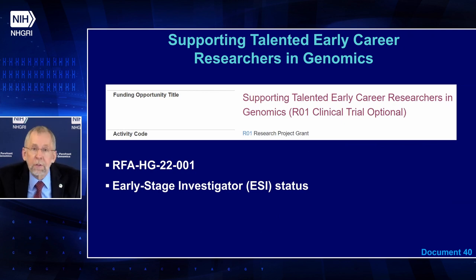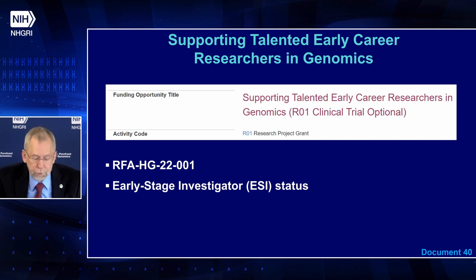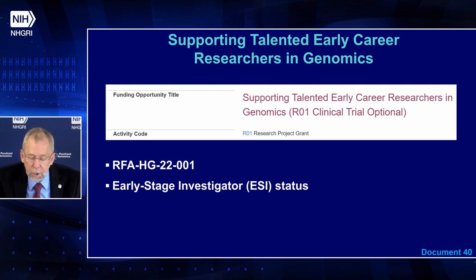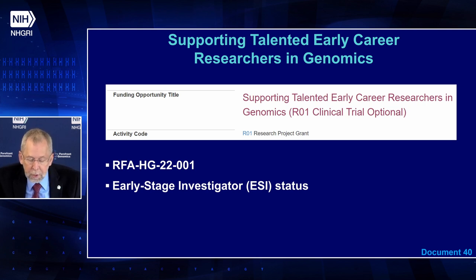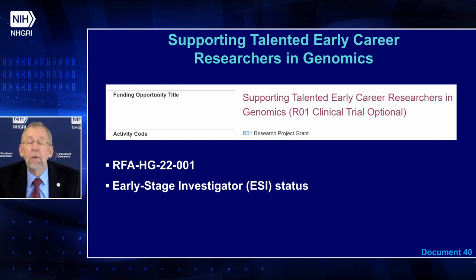An essential element of NHGRI's mission is to support talented researchers early in their careers. To this end, NHGRI has released a Funding Opportunity Announcement, or RFA, for supporting talented early career researchers in genomics. Independent genomics researchers with early stage investigator, or ESI, status may submit R01 applications in response to this RFA. The first receipt date is March 4th of this year, with additional receipt dates in February 2023 and 2024.